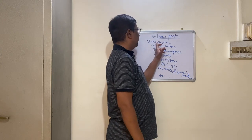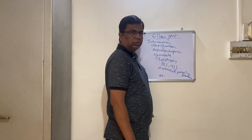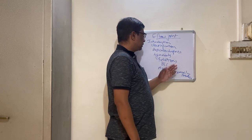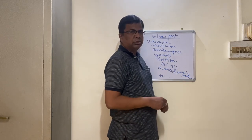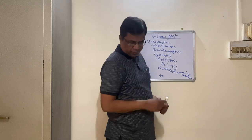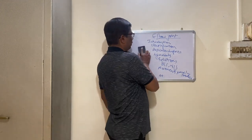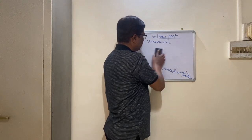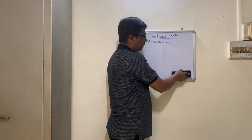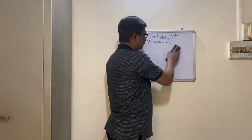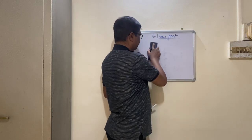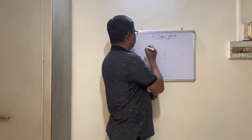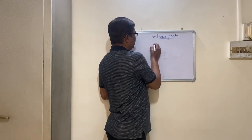So for any joint in the body, you will write introduction, classification, articular surfaces, ligaments, relations, blood supply, nerve supply, movements, muscles producing movements, and applied anatomy. Regarding the introduction of the elbow — it is a stable joint of the upper limb.